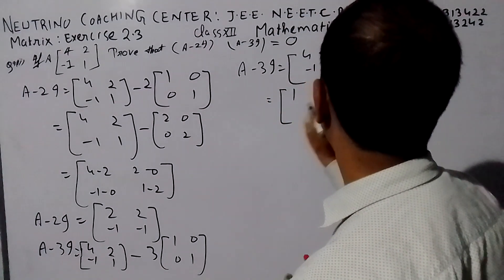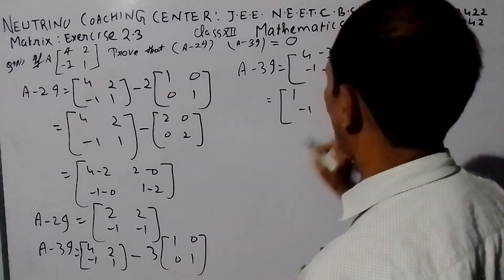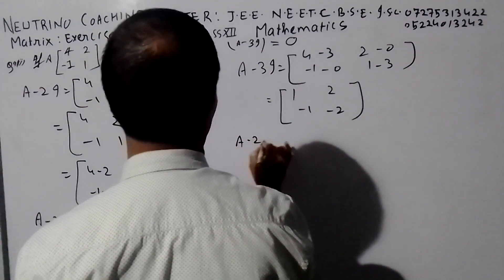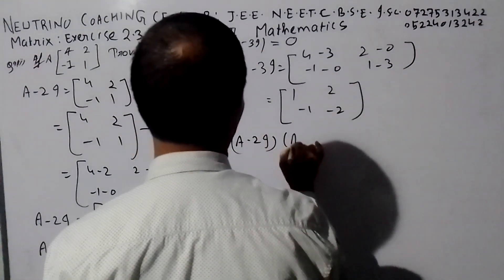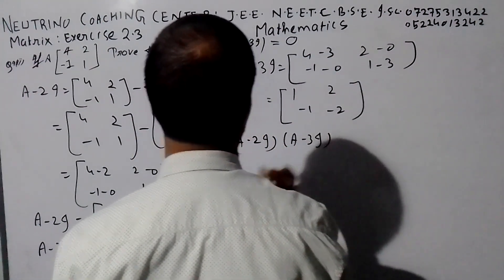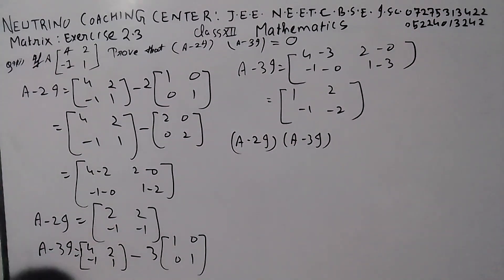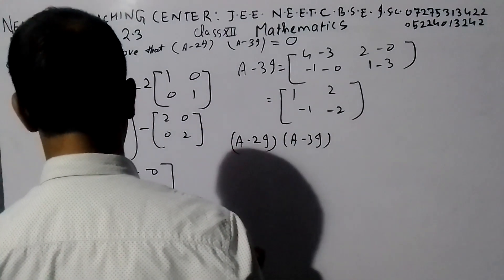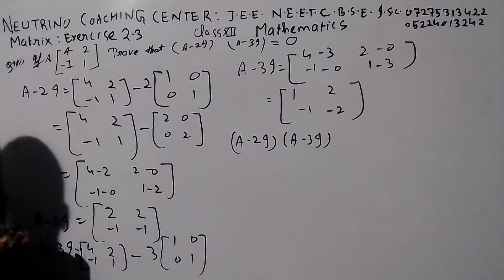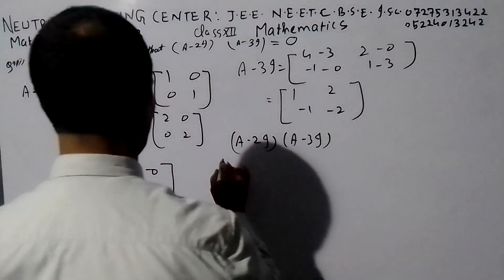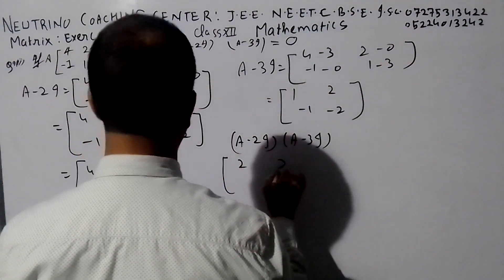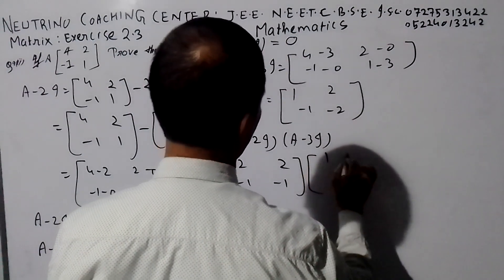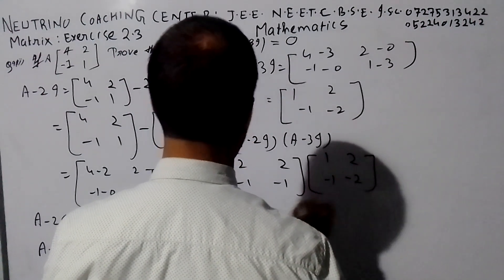One, one, two, one, two, minus one, one. Now we multiply — multiply a minus two i into a minus three i. This point: a minus two i is equal to two, two, minus one, minus one. A minus three i is equal to one, two, minus one.